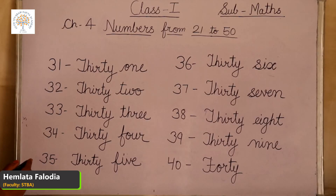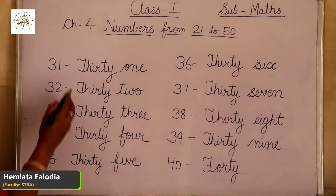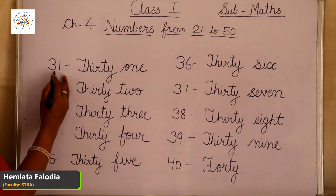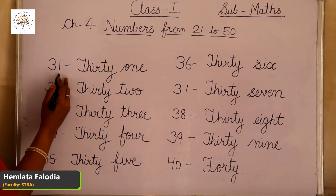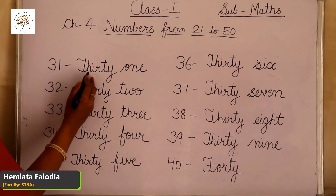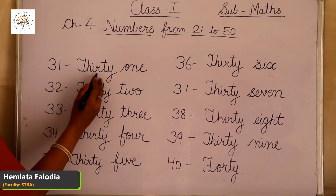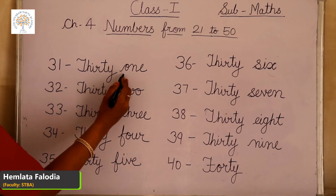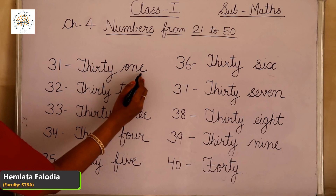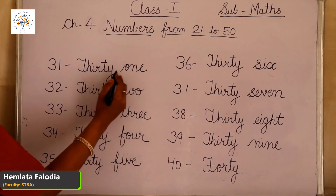Now come to the sequence of 30. Start with 31. 30 plus 1 is 31. T-H-I-R-T-Y, 30, O-N-E, 1. This is 31.